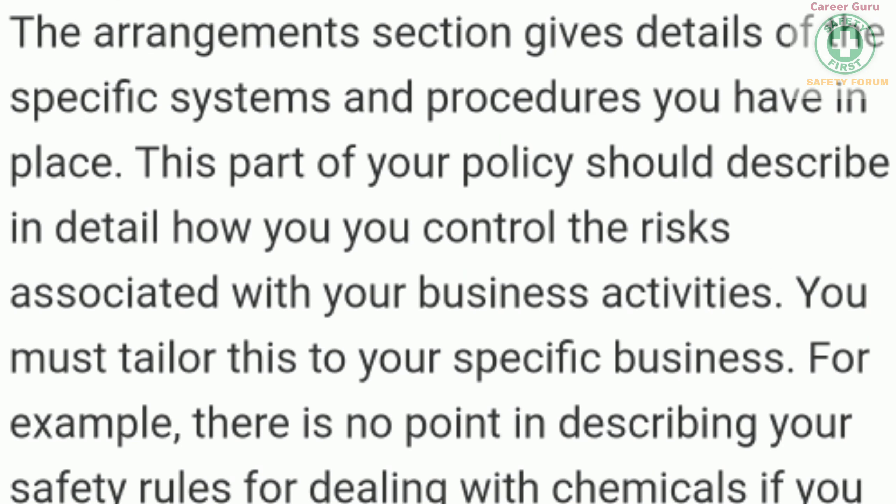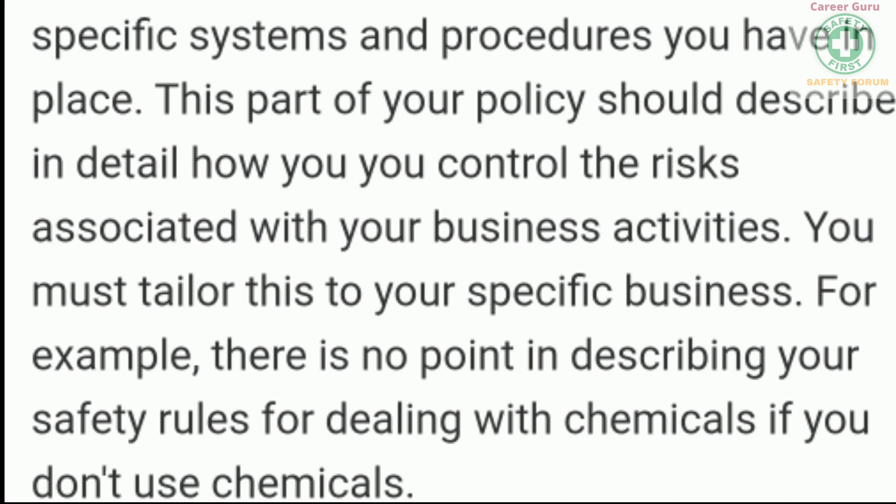The arrangements section gives details of the specific systems and procedures you have in place. This part of your policy should describe in detail how you control the risks associated with your business activities. You must tailor this to your specific business — for example, there is no point describing safety rules for chemicals if you don't use chemicals. You have to customize your regulations based on the type of business activities your company is doing.